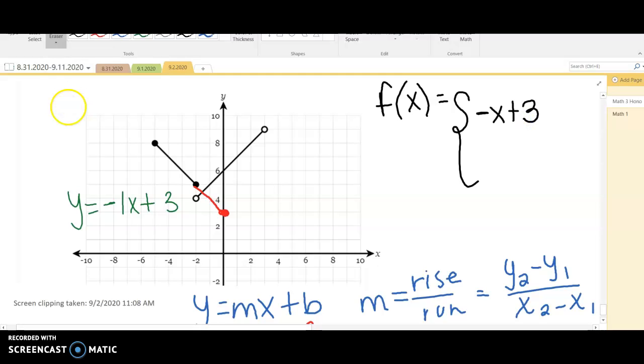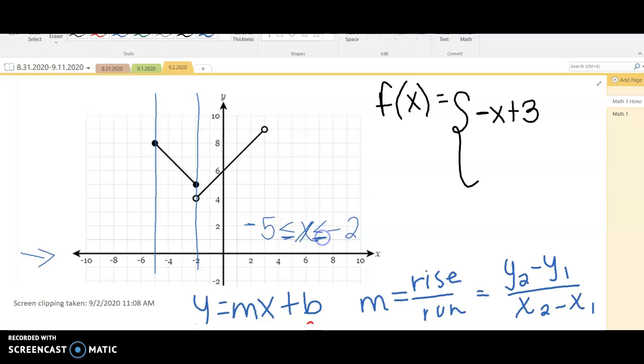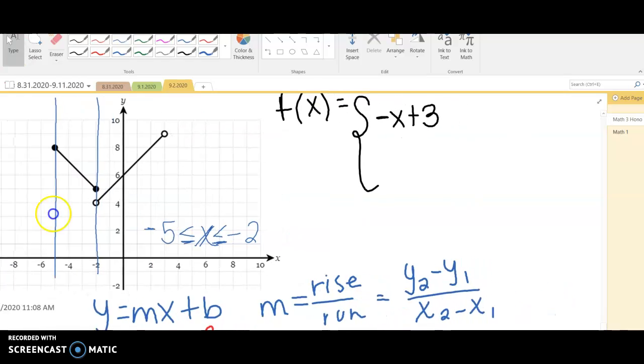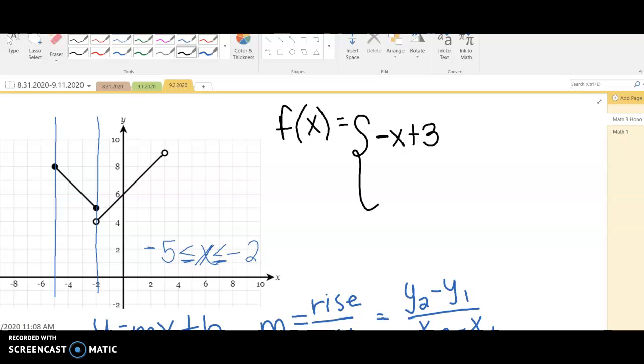And now we have to determine the domain. Remember domain is the x values and you start from left to right. So I'm going to draw my lines of where it starts and where it ends. So if you look at this example, you start at negative 5 and then it's a closed circle, so it's less than or equal to. We're talking about the x's and then it stops at negative 2. It stops at negative 2 and it's also less than or equal to. So my domain on this one is going to look like this. We found it from negative 5 to negative 2, so we're going to say negative 5 is less than or equal to x, which is less than or equal to negative 2. Because that's where it started and it stopped.